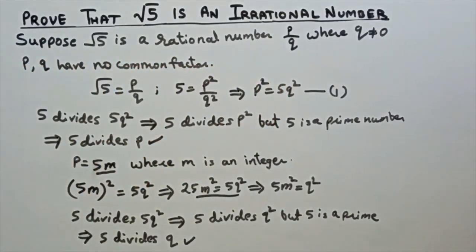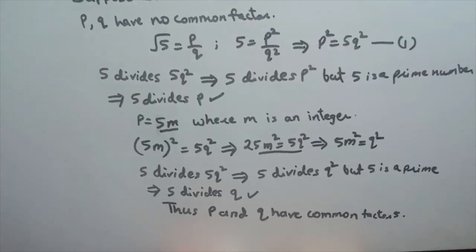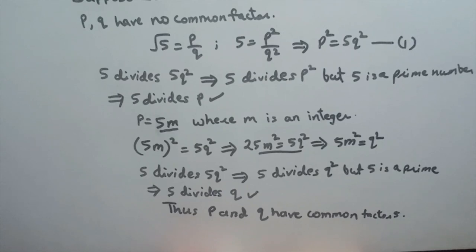Thus p and q have common factor 5. This contradicts our assumption that p and q have no common factor. So it is proved that root 5 is an irrational number.